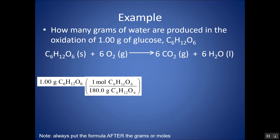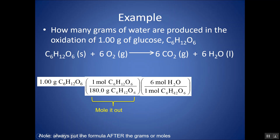Note: no matter what the coefficient of glucose is — 1, 2, 3, or 5,006 — this conversion factor to change from grams of glucose to moles of glucose only uses the subscripts to get the formula mass. Don't pay attention to any coefficient until the stoichiometry step. Now I'm in moles of glucose, so I want moles of glucose on the bottom and moles of H₂O on top, using the coefficients: 1 for glucose and 6 for H₂O.